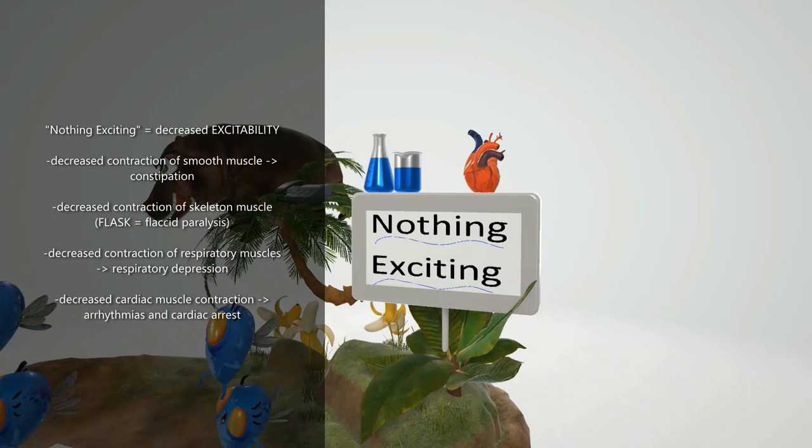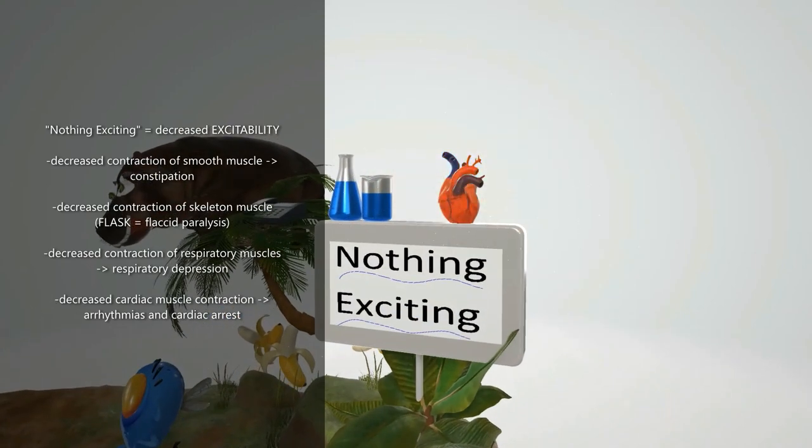So, diminished contractions of smooth muscle, for example, can lead to constipation. Diminished skeletal muscle contraction can lead to muscle weakness, cramps, and flaccid paralysis. That's what these flasks over here are going to remind us of, the flaccid paralysis, which tends to begin in the lower extremities and ascends upward. Respiratory muscles may also be affected, which leads to a respiratory depression. And finally, hypokalemia can affect cardiac muscle contractions, which lead to cardiac arrhythmias as well as cardiac arrest, represented by this heart here that's exploding.